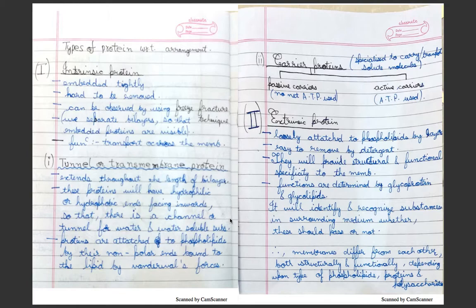Intrinsic protein is of two types: tunnel or carrier. Tunnel, also known as transmembrane protein, extends throughout the length of the bilayer. These proteins will have hydrophilic ends facing inwards so that there is a channel or tunnel for water and soluble substances.